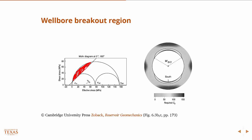So if we plot where those stresses occur on our wellbore, it can be indicated by this line. Anywhere inside this line corresponds to a stress state — mainly hoop stresses — that exceeds the Mohr failure envelope, and therefore will cause the wellbore to be unstable and cause breakouts.